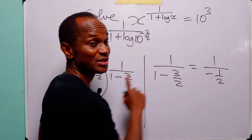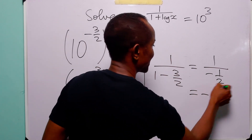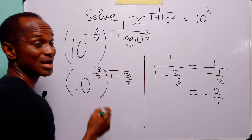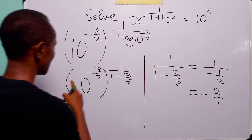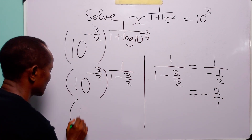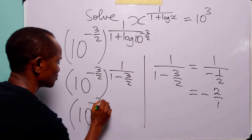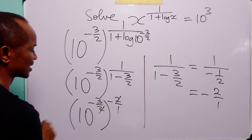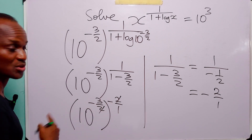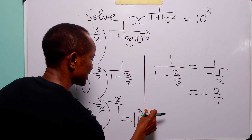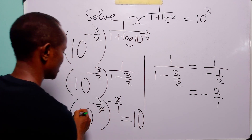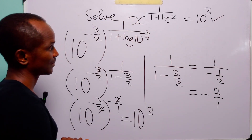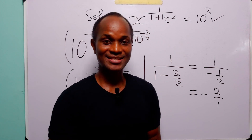Of course when you have 1 over (minus 1 over 2) it simply means the reciprocal of this fraction, which is equal to minus 2 over 1. So this whole exponent is simply minus 2. So we have 10 to the power (minus 3 over 2) times (minus 2). The 2s cancel and minus times minus is plus, so this is equal to 10 to the power 3. That is correct, and with that we come to the end of today's exercise.